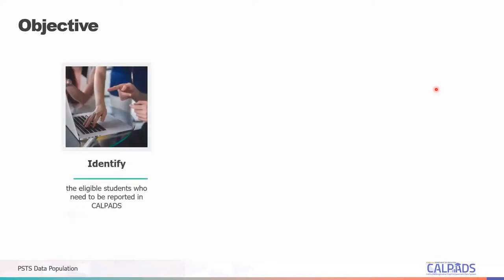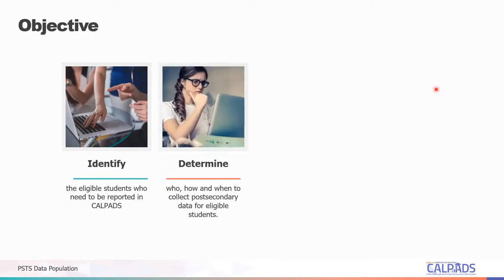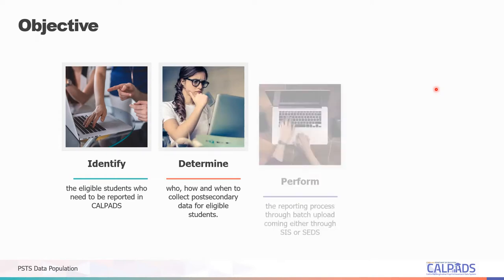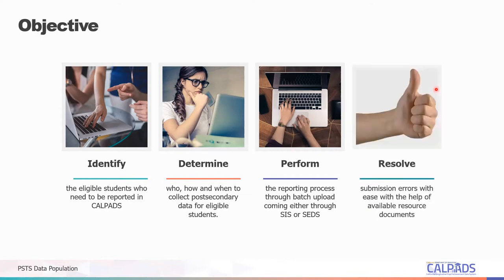Through this session, you will be able to identify the eligible students who need to be reported in CALPADS, determine who, how, and when to collect post-secondary data for eligible students, perform the reporting process through batch upload coming either through the SIS or SEDS, and resolve submission errors with ease with the help of available resource documents.